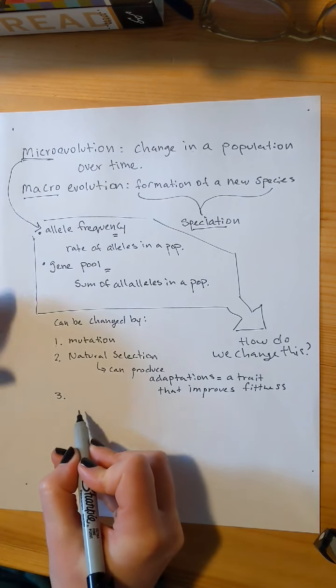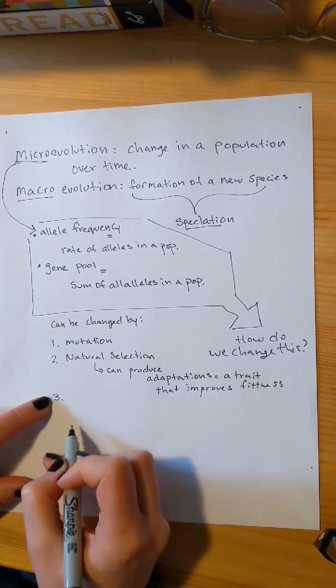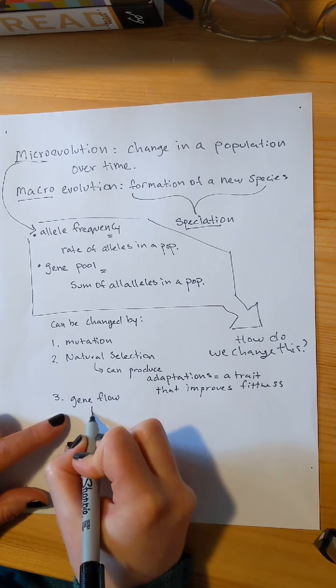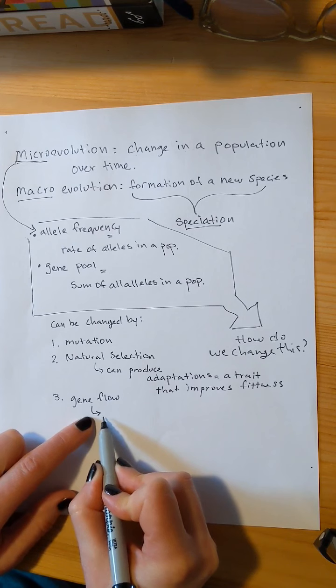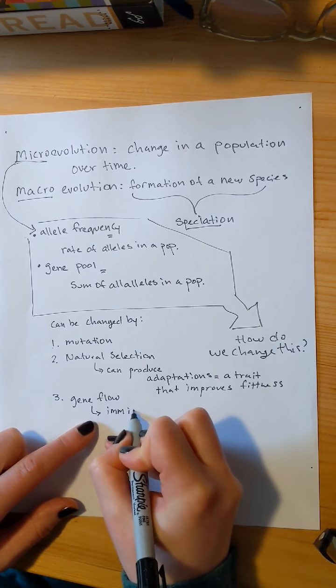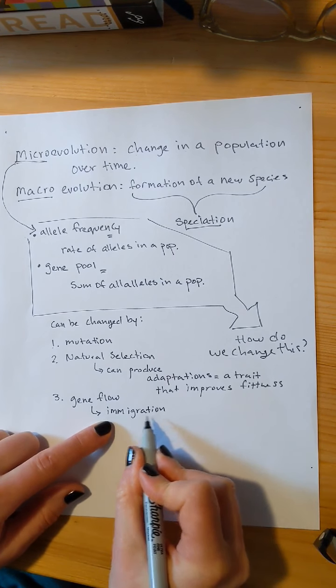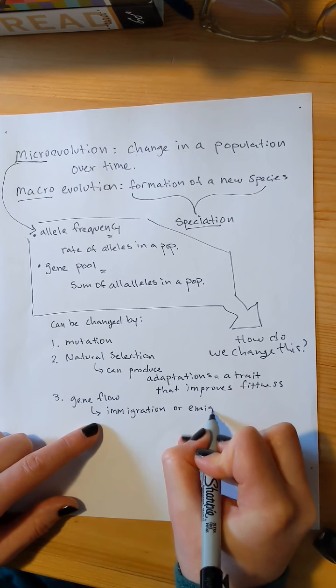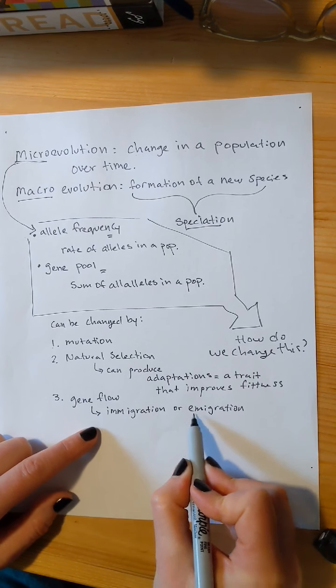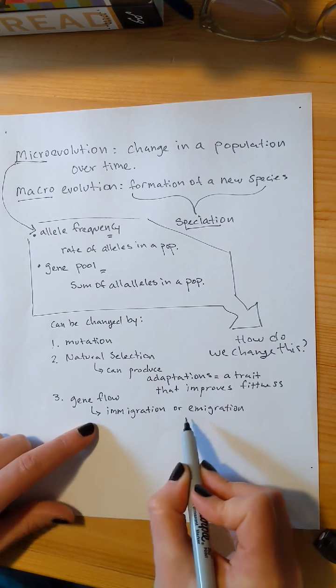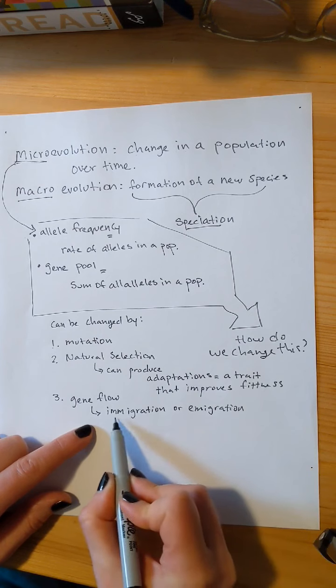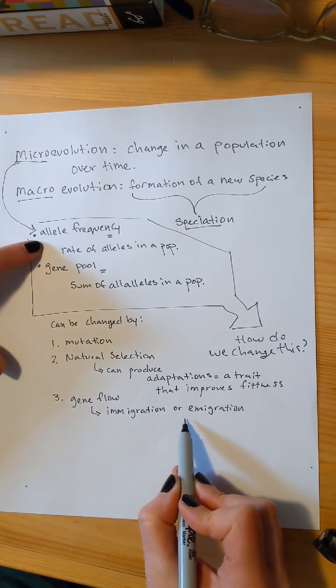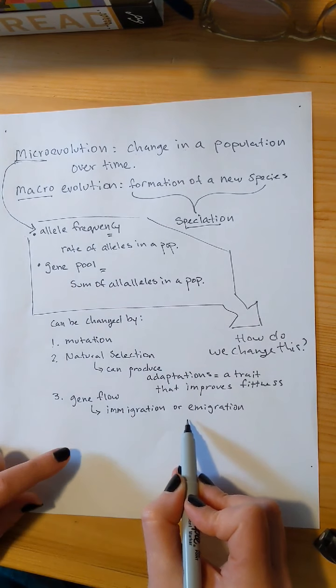The third way that we can change the allele frequency in the gene pool is with gene flow. Gene flow is going to be thought of as alleles entering or leaving your population. This is occurring via immigration. So an organism comes into your population bringing a whole new set of alleles to potentially spread to the next generation. Or emigration, which is where an individual in your population leaves. So I was born in San Francisco but now I live in Portland. I emigrated from San Francisco and immigrated to Portland. When I moved from one location to the other I took my genes with me. So my genes have changed the frequency and the gene pool in my population because I brought them with me.